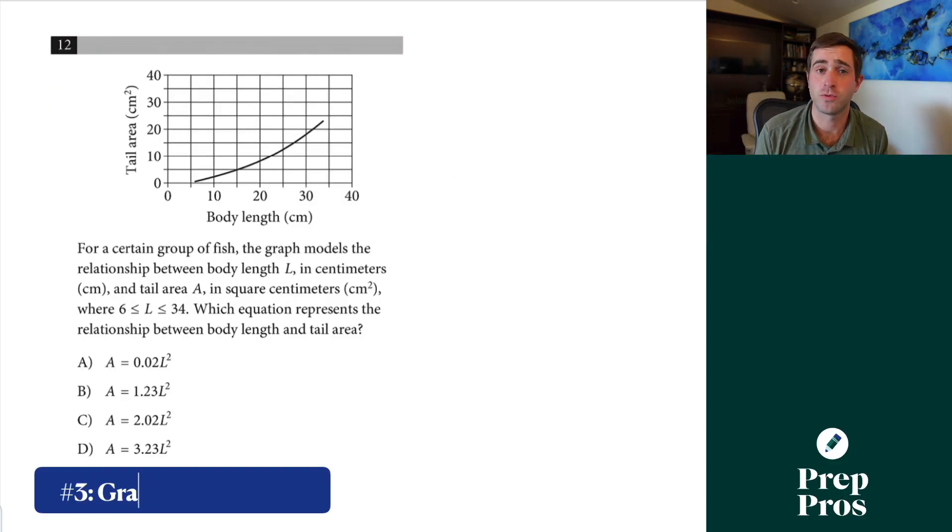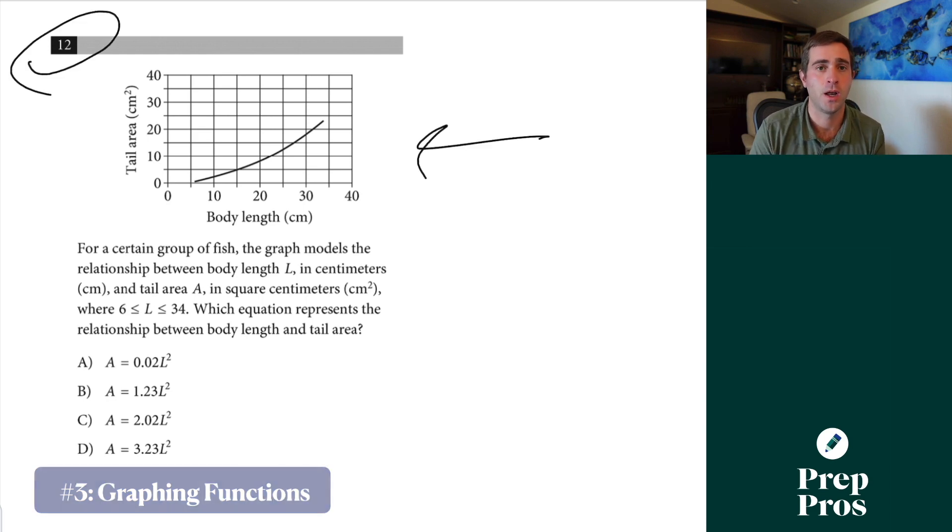Up at number three is graphs on the no calculator section and now this is a tip that whether we're dealing with an exponential function or a linear one you can use to get these right every single time. Do not try to do this question conceptually simply pick points and check your answer choices. So here the easiest point I could pick would be well it looks like 10 comma 2 maybe 10 comma 3 but all these answer choices are going to be so far spread out we don't have to be really specific.